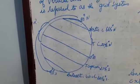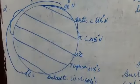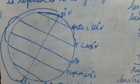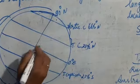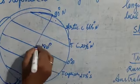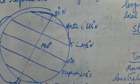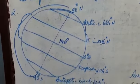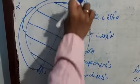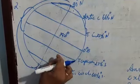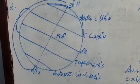For longitudes: the length of all the meridians is the same. The zero degree longitude is the prime meridian, with east and west on either side. 180 degrees east and 180 degrees west together make 360 degrees total. The length of the meridians is the same, but the distance between the meridians decreases towards the poles.